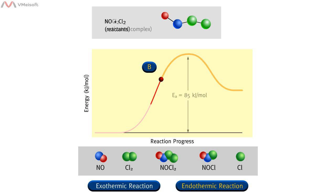When molecules collide, they form an activated complex — a temporary species formed by the reactant molecules as a result of the collision before they form the product. In this reaction between NO and Cl2, the activated complex is nitric chloride, NOCl2.